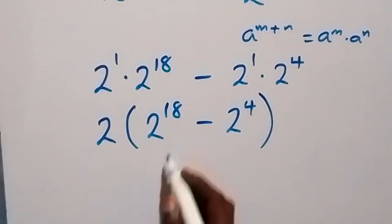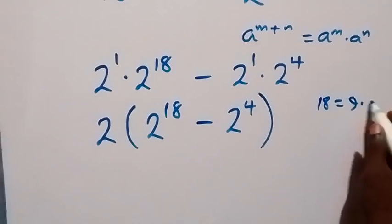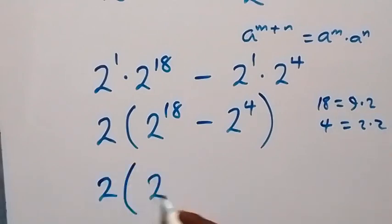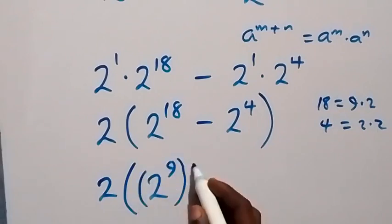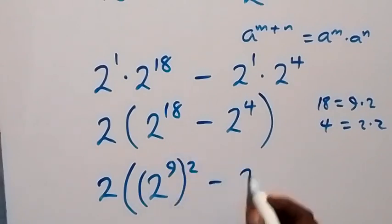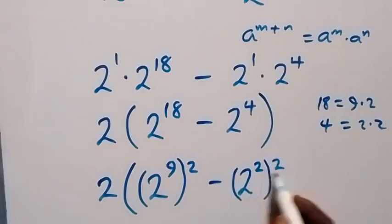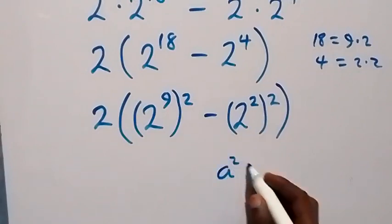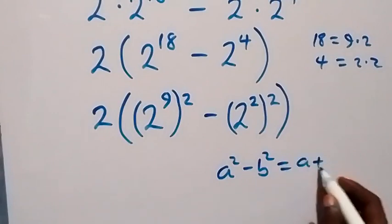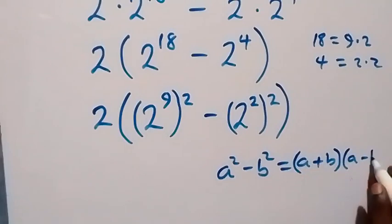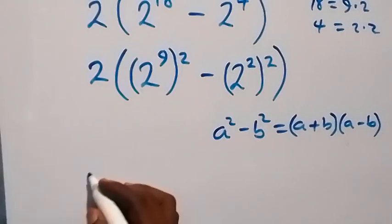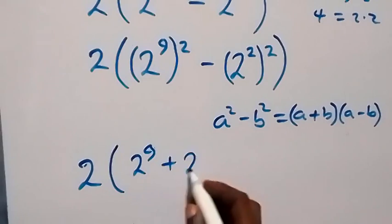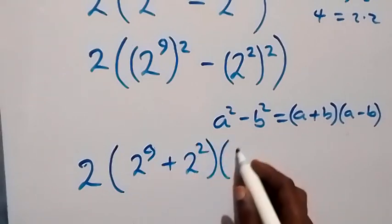We can also write 18 as 9 times 2, and 4 as 2 times 2. So we write this as 2 into bracket: 2 into bracket (2 raised to power 9) raised to power 2, giving us 18; minus 2 raised to power 2, raised to power 2, giving us 4. This follows the pattern of the difference of squares: a squared minus b squared equals (a plus b)(a minus b). So we have 2 into bracket (2 raised to power 9 plus 2 raised to power 2) times (2 raised to power 9 minus 2 raised to power 2).